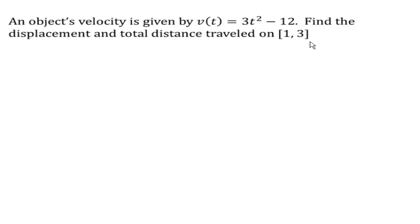Displacement measures the difference between where we start and where we end, whereas total distance traveled adds up everything. Since my velocity starts negative here, if I move backwards and then forwards, displacement measures the distance between where I start and end, while total distance traveled adds up both movements.